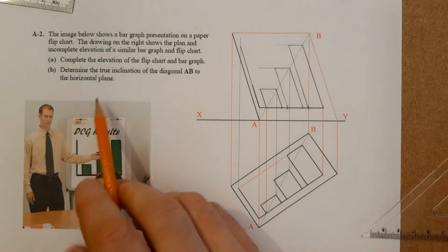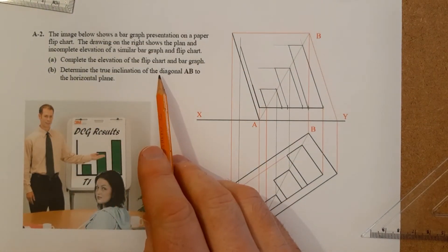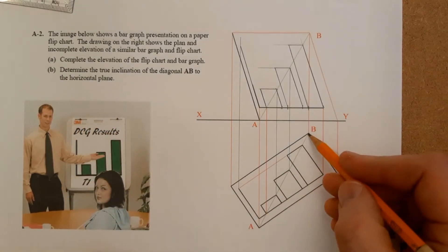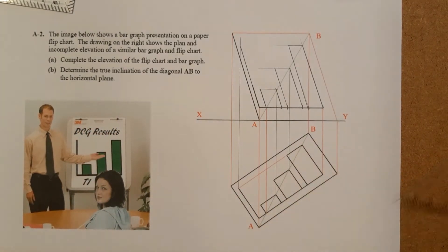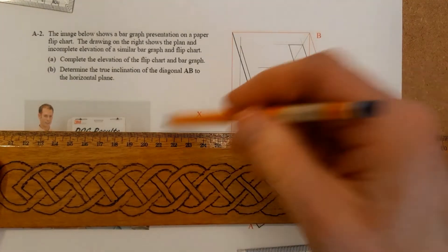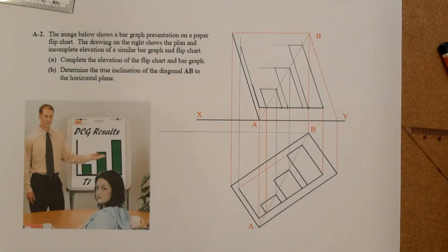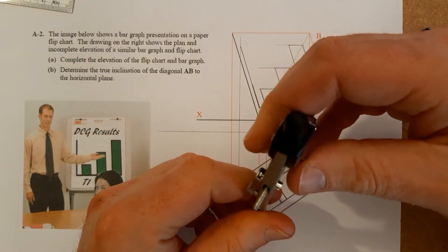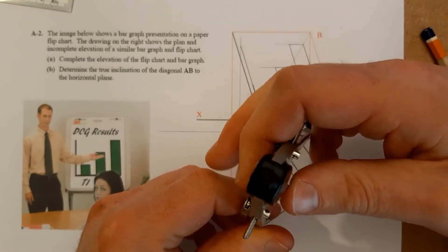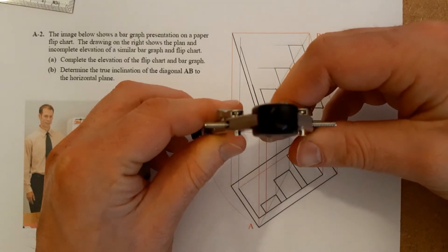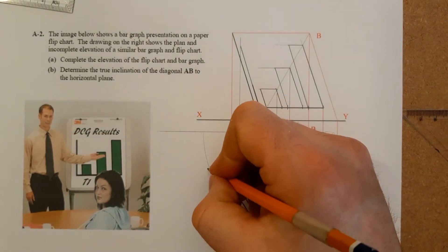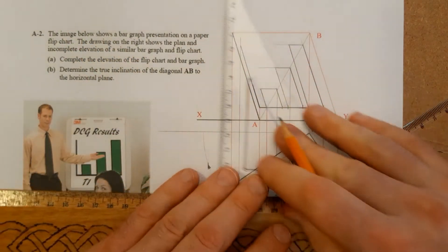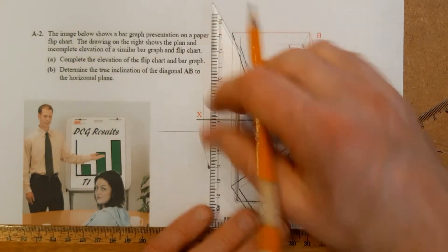Part B is asking us to determine the true inclination of the diagonal AB to the horizontal plane. So we have this line here. The most simple way about doing this: draw a line across like so, get your compass, set it to the distance BA, and we're just going to revolve that so we'll be looking at it at 90 degrees. Bring it up.